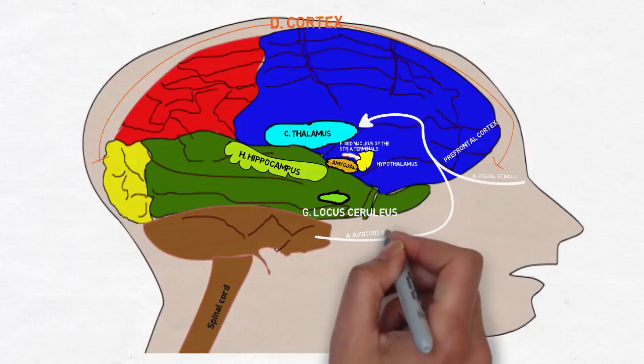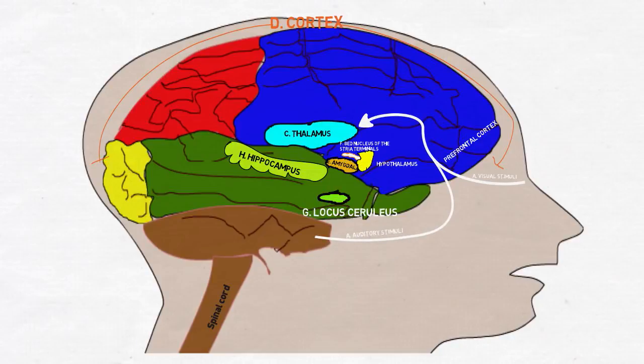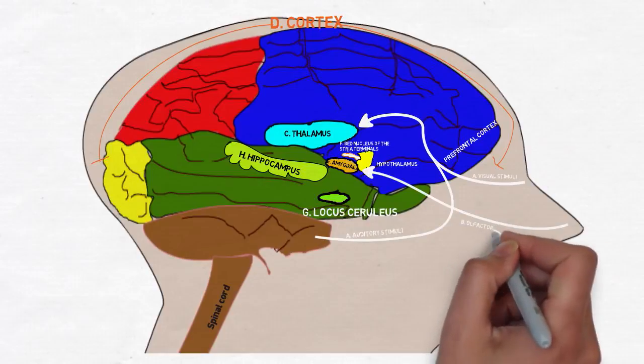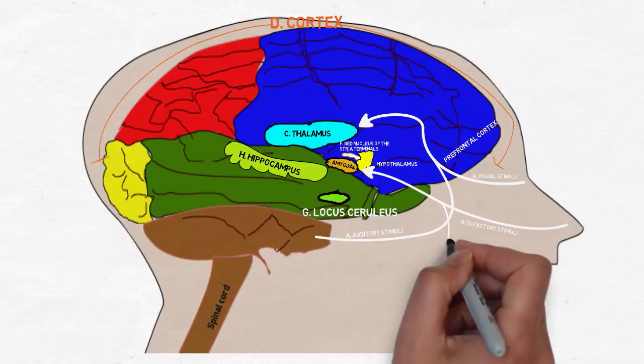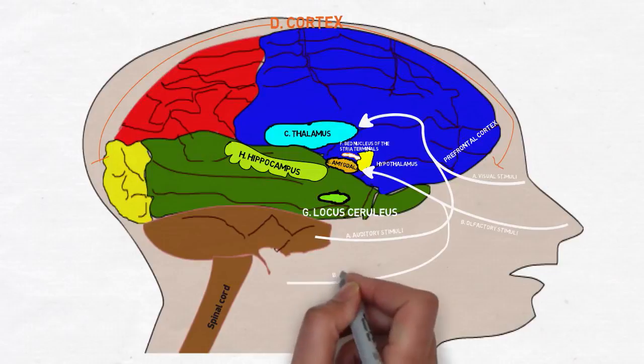Sight and sound are first processed by the thalamus, filtering incoming cues and sent directly to the amygdala or to the cortex. Smell and touch go directly to the amygdala, bypassing the thalamus altogether. This is why smells often evoke very powerful memories or fears.